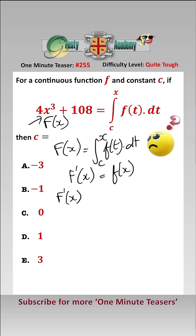i.e., f dashed of x, which is equal to f of x, is equal to 12x squared. So now we have